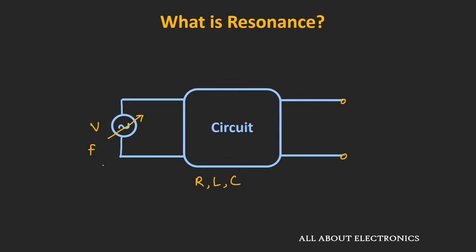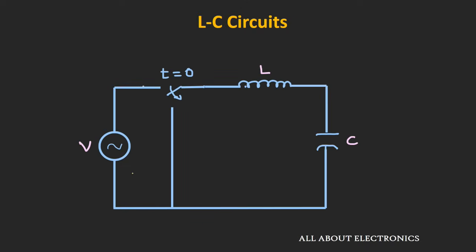That particular frequency at which we are getting the maximum output is known as the resonant frequency. This resonance phenomenon occurs in the electrical circuit because of the capacitor and the inductor, as both elements have the ability to store energy. Now let us understand this resonance phenomenon by taking a simple LC circuit.